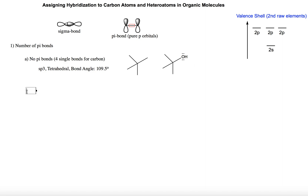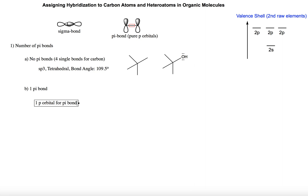The second situation we can find is atoms with one pi bond. If there is one pi bond, one of the p orbitals in the valence shell will be used for that pi bond. Therefore, only three atomic orbitals are available to be hybridized, and the resulting hybridization will be SP2. So an atom with one pi bond will use one pure p orbital for the pi bond and will have three SP2 hybridized orbitals.